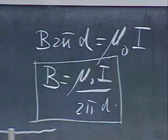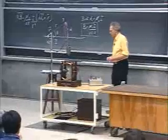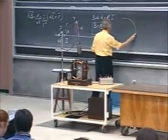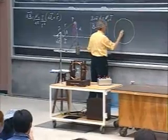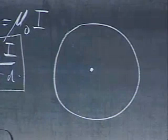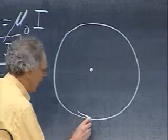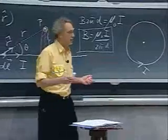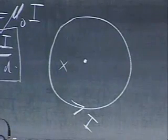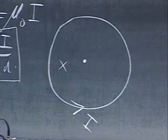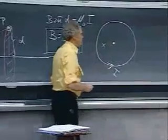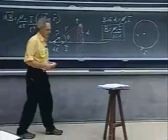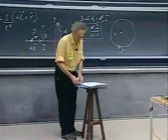Ampere's law in general works when we have cylindrical symmetry. There is one problem where Ampere's law bitterly fails and where Biot-Savart is highly superior: a conducting circular loop carrying current I, where you're asked for the magnetic field right at the center. It only works for the center. Biot-Savart will immediately give you the answer, and Ampere's law won't work.